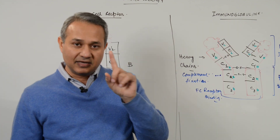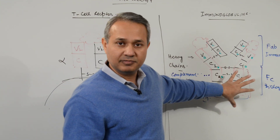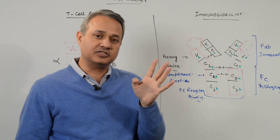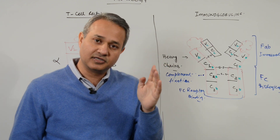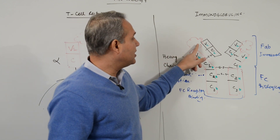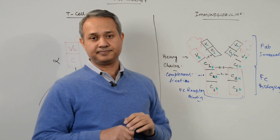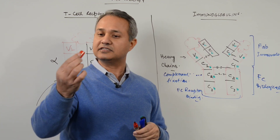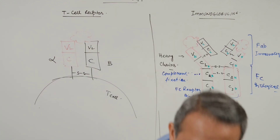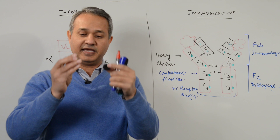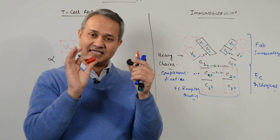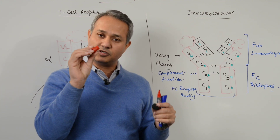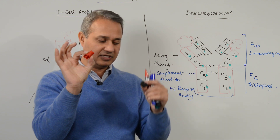One B cell — immunoglobulins come from B cells — one B cell can produce millions of immunoglobulins, but all of them can only bind with one pattern of antigen. So if I have two antigens, one B cell producing immunoglobulins will only produce immunoglobulins which can combine with one type of antigen and not the other.